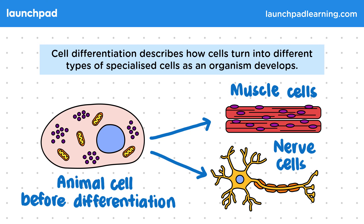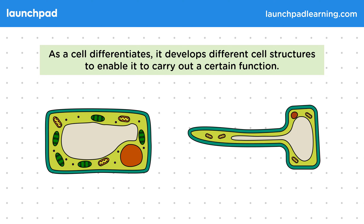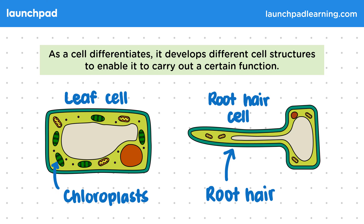So what changes happen to cells when they differentiate? As a cell differentiates, it develops different cell structures to enable it to carry out a certain function. Two examples of specialized plant cells are the leaf cell, which contains chloroplasts to help it carry out photosynthesis, and the root hair cell, which has that root hair extension. This helps it to absorb water and mineral ions from soil.